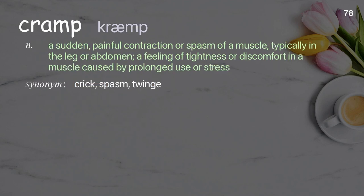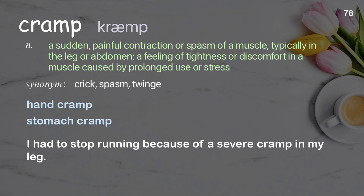Cramp: a sudden painful contraction or spasm of a muscle, typically in the leg or abdomen; a feeling of tightness or discomfort in a muscle caused by prolonged use or stress. Examples: hand cramp, stomach cramp. I had to stop running because of a severe cramp in my leg.